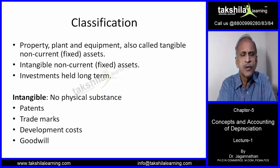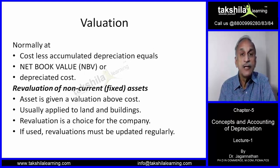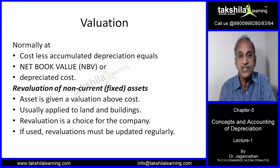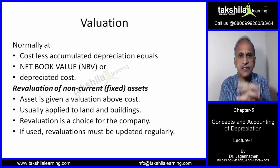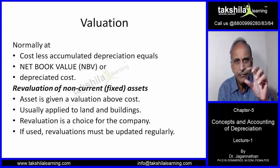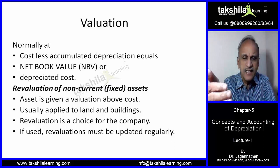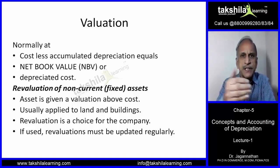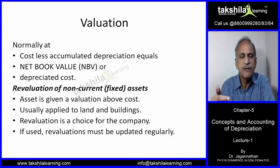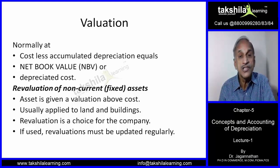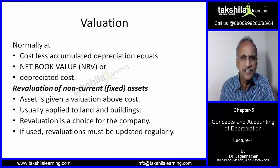When talking about depreciation, we are largely concerned with tangible assets. For valuation of tangible assets: cost less accumulated depreciation equals net book value. For example, if you bought machinery for 50 lakhs and its value is reduced by 10 lakhs due to usage, the net book value will be 40 lakhs — you debit assets DR to bank for 50 lakhs, and depreciation DR to assets by 10 lakhs, reducing the asset value to 40 lakhs. Net book value is also called depreciated cost.